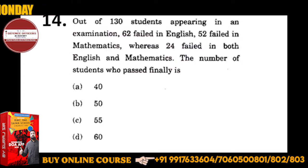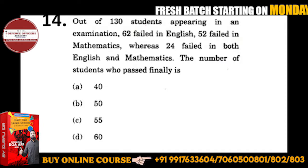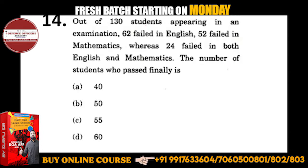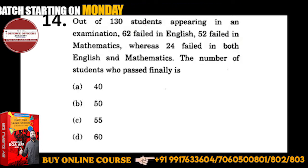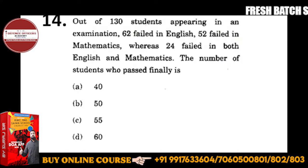Let's go to question number 14. This is a question of sets - I have one question of sets in RMC. Out of 130 students appearing in an examination, 62 failed in English, 52 failed in Mathematics, whereas 24 failed in both English and Mathematics. The number of students who passed finally is what we need to find.